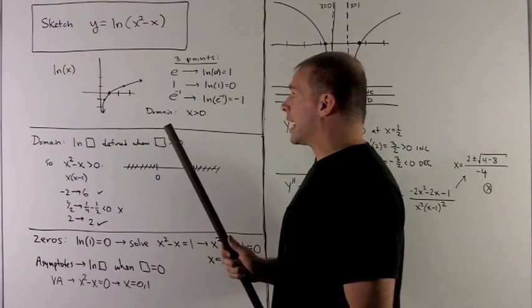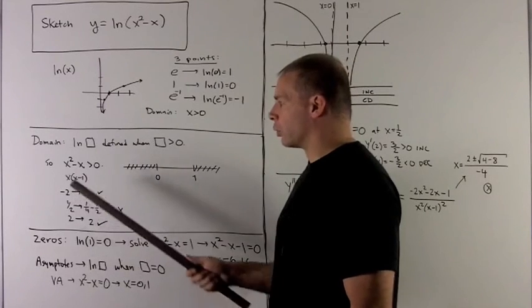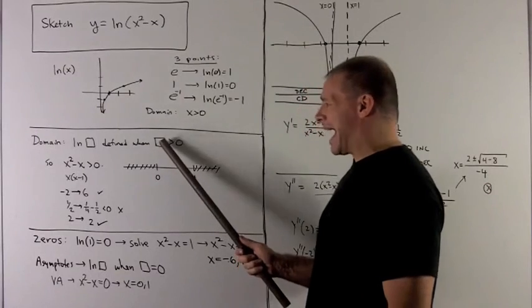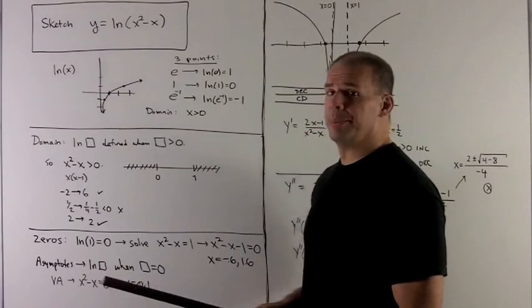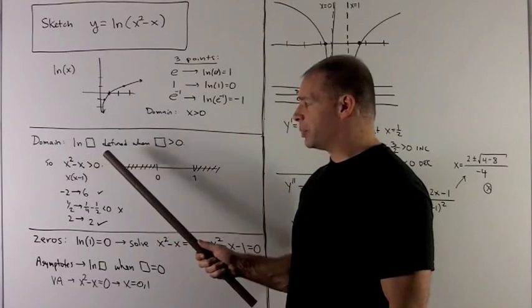Now for natural log of x squared minus x, I first want to find the domain. The rule is going to be natural log of box will be defined whenever box is bigger than 0. So we're interested in when x squared minus x is bigger than 0.